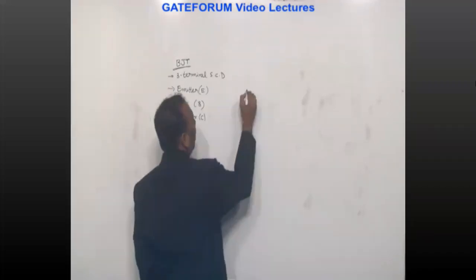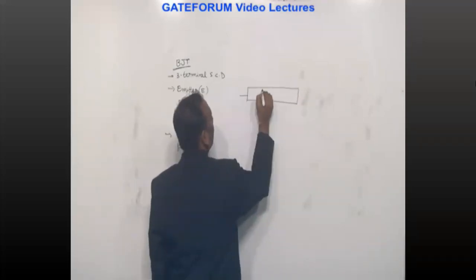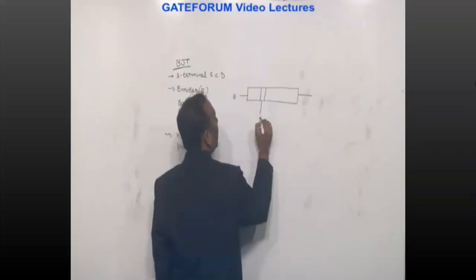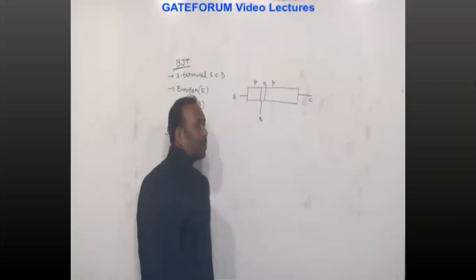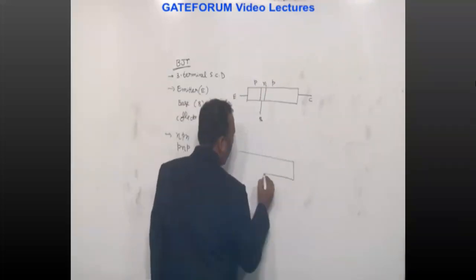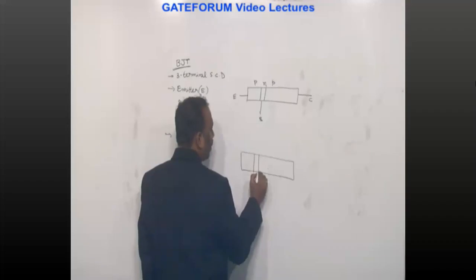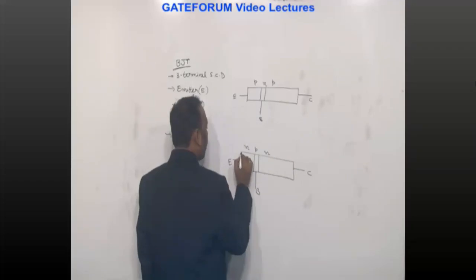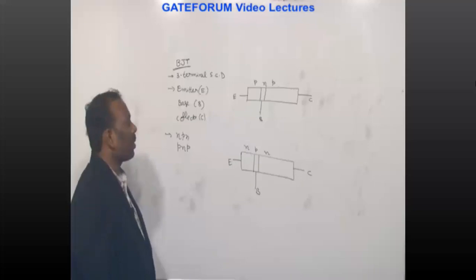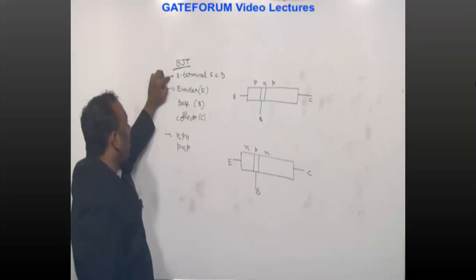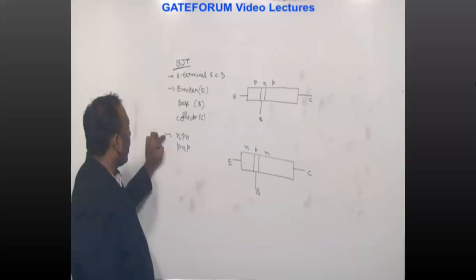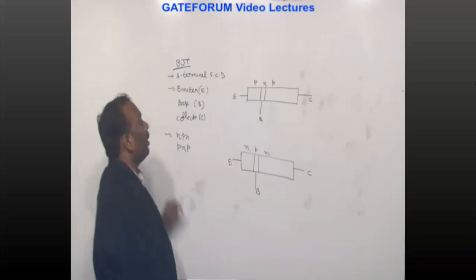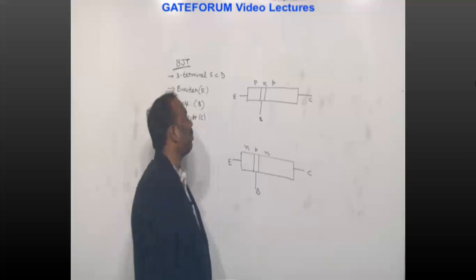In terms of structure, PNP has emitter, base, and collector arrangement, while NPN has collector, base, and emitter. A BJT has two PN junctions: the emitter-base junction and the collector-base junction.